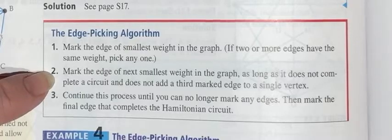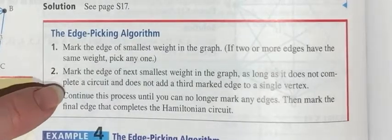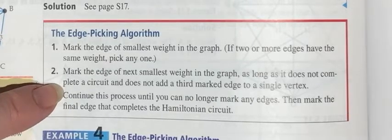Mark the edge of the smallest weight in the graph as long as it does not complete a circuit and does not add a third marked edge to a single vertex.